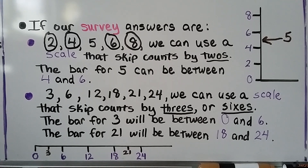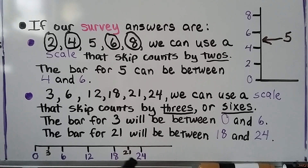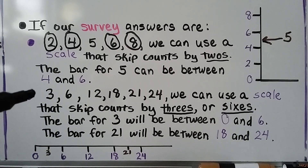For answers like 3, 6, 12, 18, 21, and 24, we can use a scale that skip counts by threes or sixes. If we skip count by sixes, the bar for three would be in between zero and six, and the bar for twenty-one would be in between eighteen and twenty-four. Either scale — counting by threes or sixes — would work for these numbers.